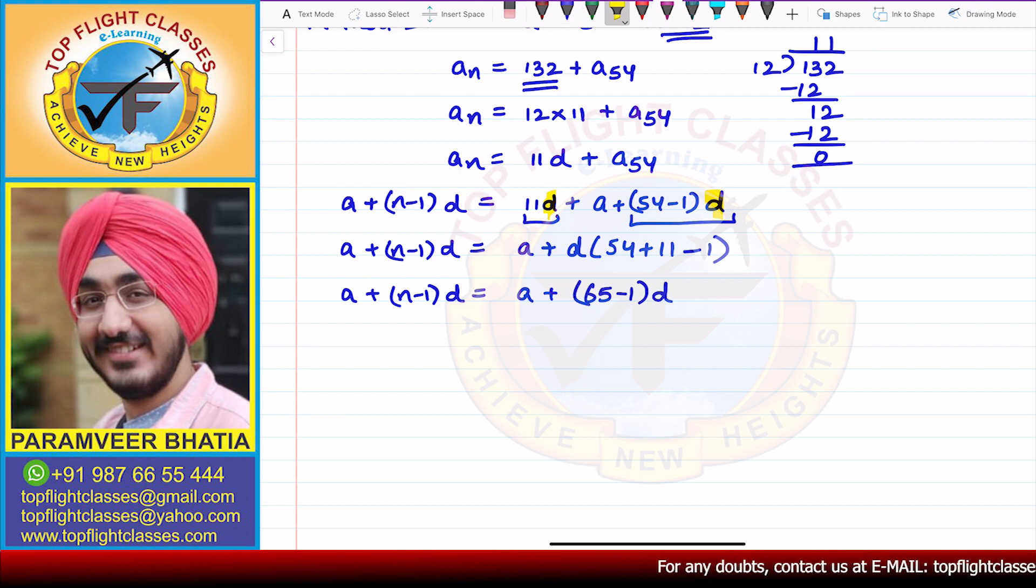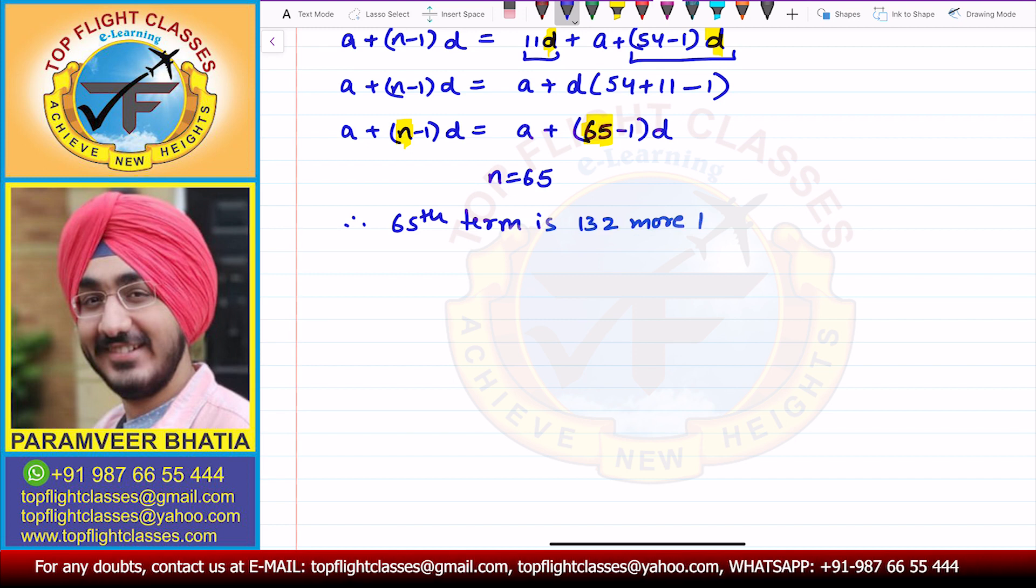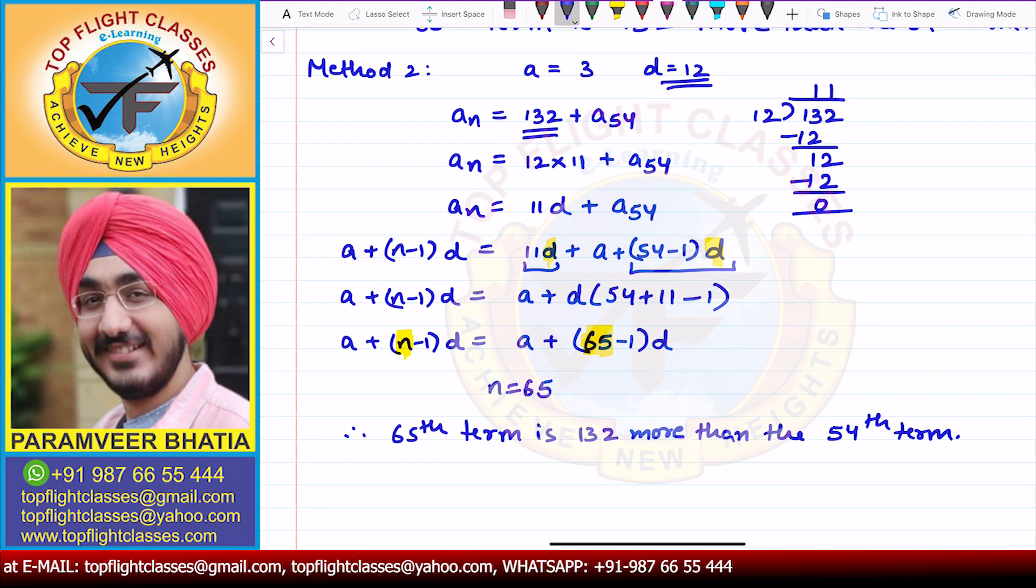When you compare here, you will clearly see that N equals 65. Therefore, the 65th term is 132 more than the 54th term. This method is our second method, a trick method. You can solve this question fast and easily, but you have to visualize that 132 is a multiple of 12.